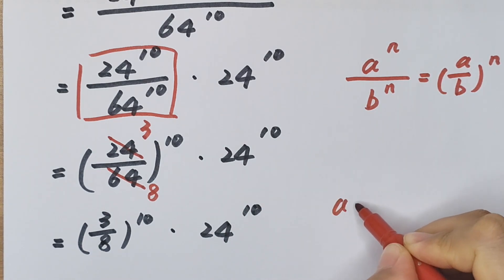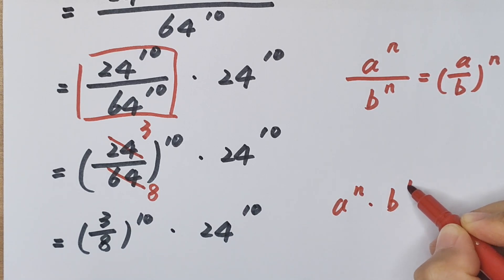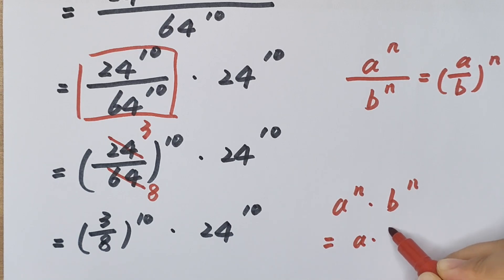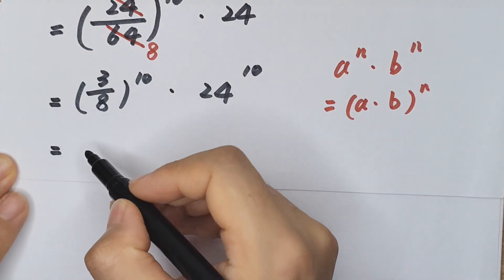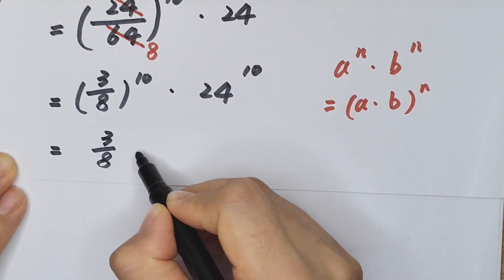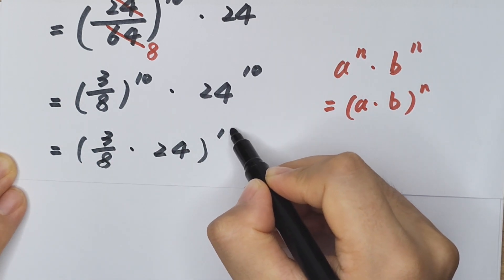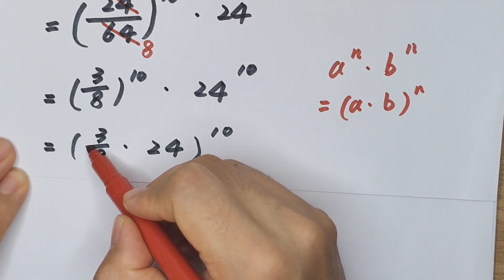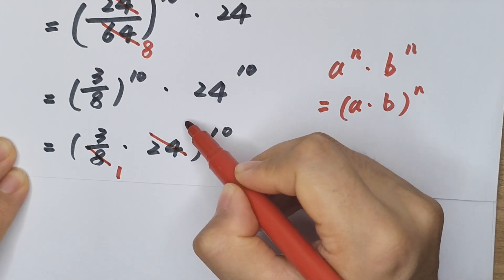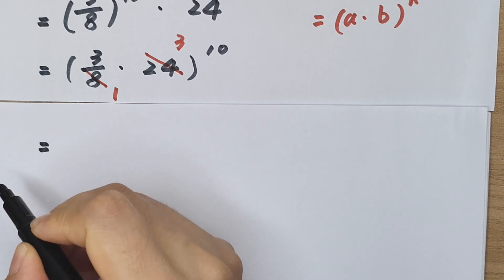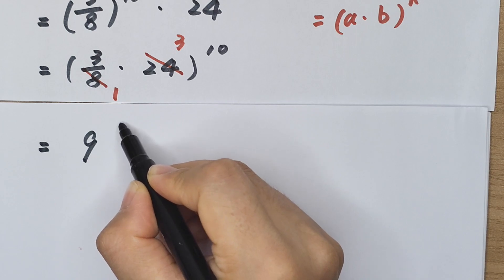We know a to the power of n times b to the power of m equals a times b, in brackets, to the power of 10. So this becomes 3 divided by 8, in brackets, to the power of 10. Then dividing 24 by 8 gives 3, so we have 3 times 3 which is 9, to the power of 10.